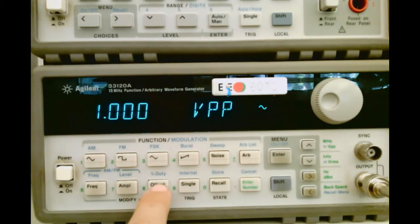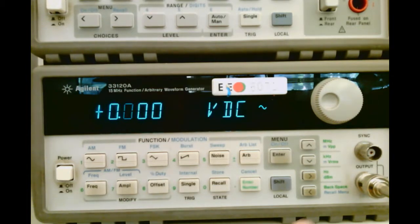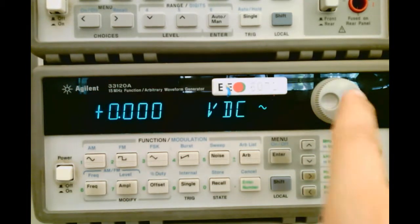Then I can change my offset, which is my average value. I'll make that 1 volt.